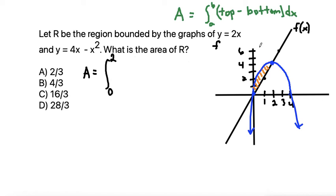And the top function, let's see if we start at the top and we come down, we hit the blue function first. So that's our 4x - x². So we'll do the top function is 4x - x². And then subtract out the bottom function. The bottom function is our 2x function. And then all of that dx.